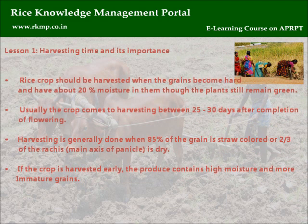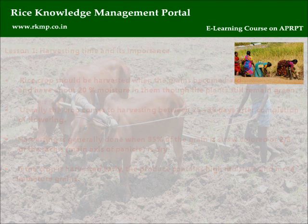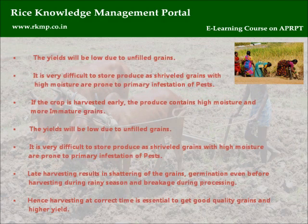Lesson 1 — Harvesting time and its importance. Rice crops should be harvested when the grains become hard and have about 20% moisture, though the plants still remain green. Usually the crop comes to harvesting between 25 to 30 days after completion of flowering. Harvesting is generally done when 85% of the grain is straw-colored, or two-thirds of the rachis — the main axis of the panicle — is dry. If the crop is harvested early, the produce contains high moisture and more immature grains, and yield will be low due to unfilled grains.